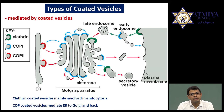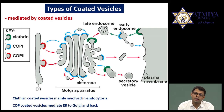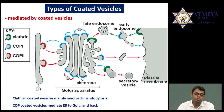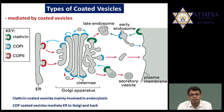Now let us talk about vesicular transport. For vesicle formation, coat proteins are required. There are two types of coat protein: coat protein 1 (COP1) and coat protein 2 (COP2). Vesicles are also formed by clathrin. So there are two methods: clathrin-coated vesicles and coat-protein-coated vesicles. All proteins are not translocated by COP1 and COP2 in the same way — there is a fixed translocation mechanism.